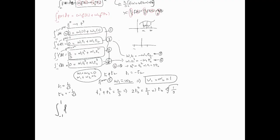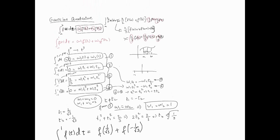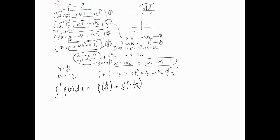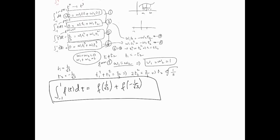Our Gaussian quadrature rule is: the integral from -1 to 1 of f(t) dt ≈ f(1/√3) + f(-1/√3). The problem is that real integrals go from a to b, not -1 to 1. This is easily fixed with a change of variable.